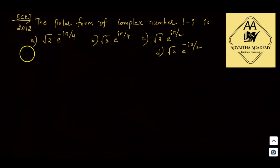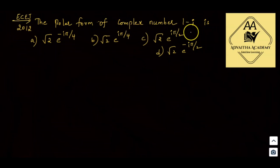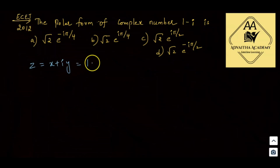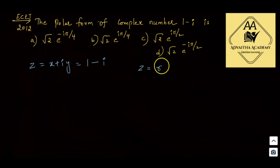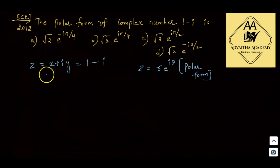The first question is ESET 2012: the polar form of the complex number 1 minus i is? We know that z equals x plus iy in Cartesian form. z equals r times e^(iθ) is the polar form, and 1 minus i is given in Cartesian form.